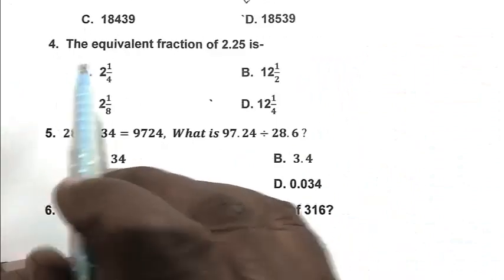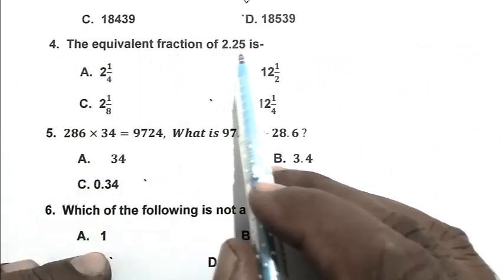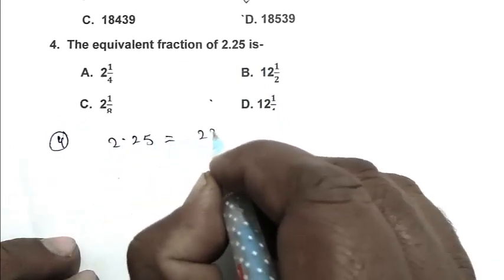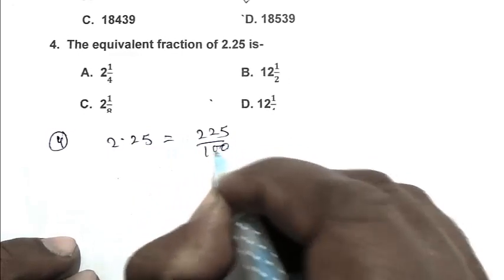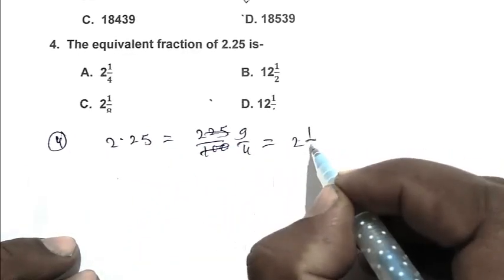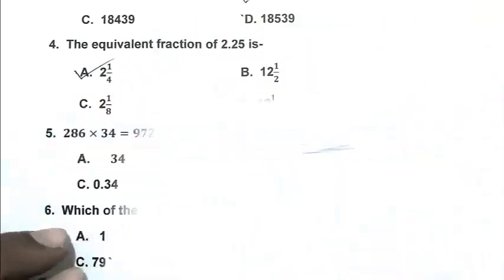Question number four: the equivalent fraction of 2.25 is. 2.25, that is 225 by 100, 9 by 4, that is 2¼. So A is the right answer.